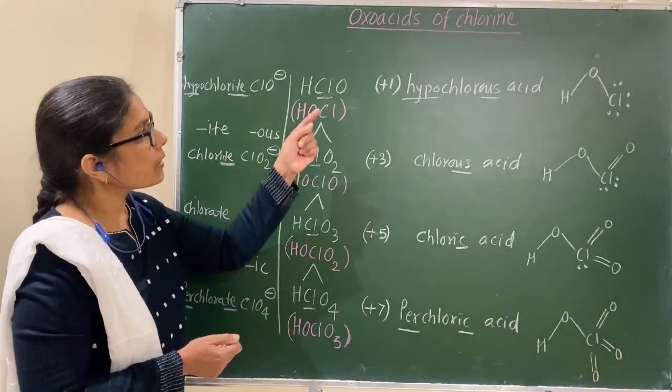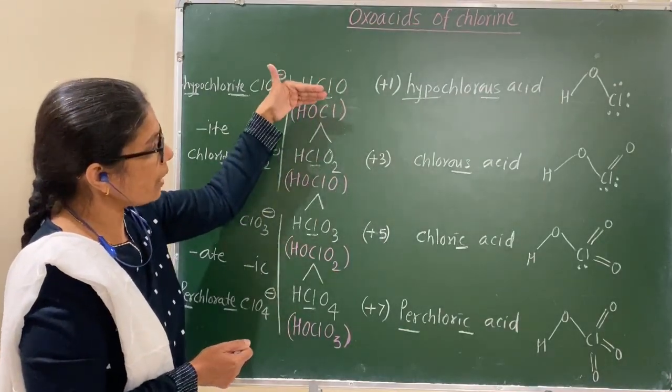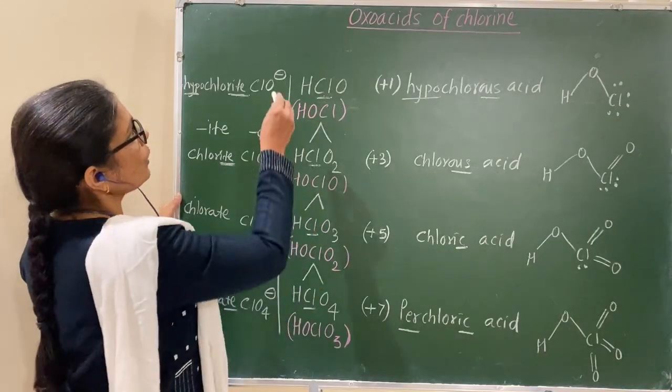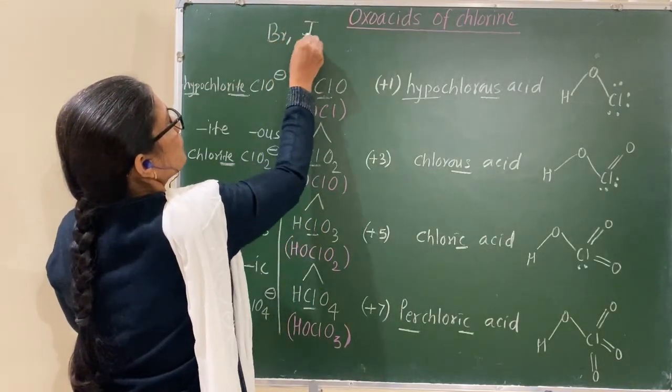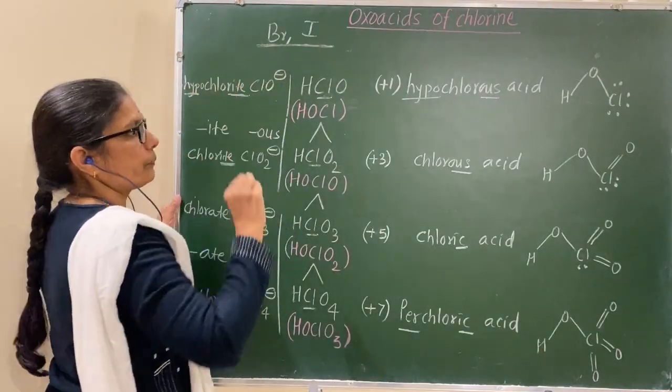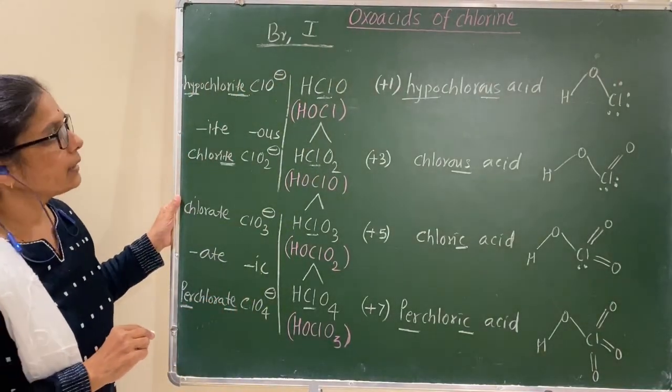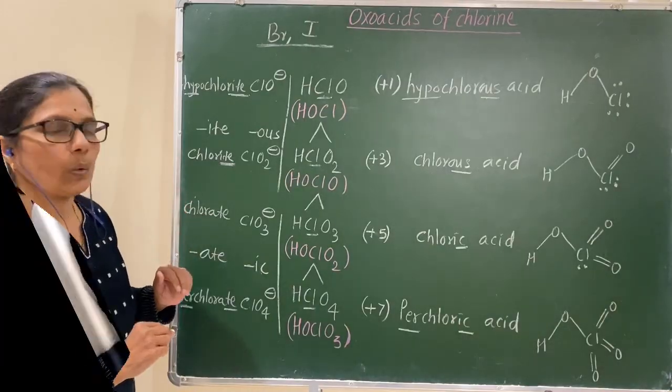Now, same structure, same form, similar for bromine and iodine. It's about the oxoacids of chlorine.